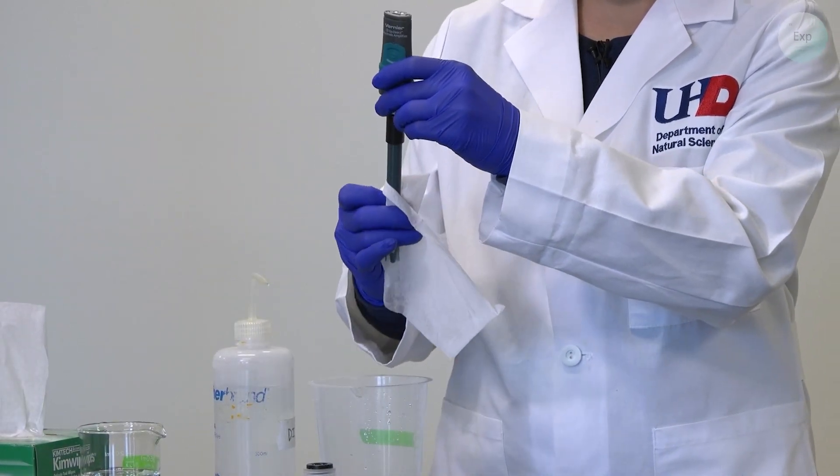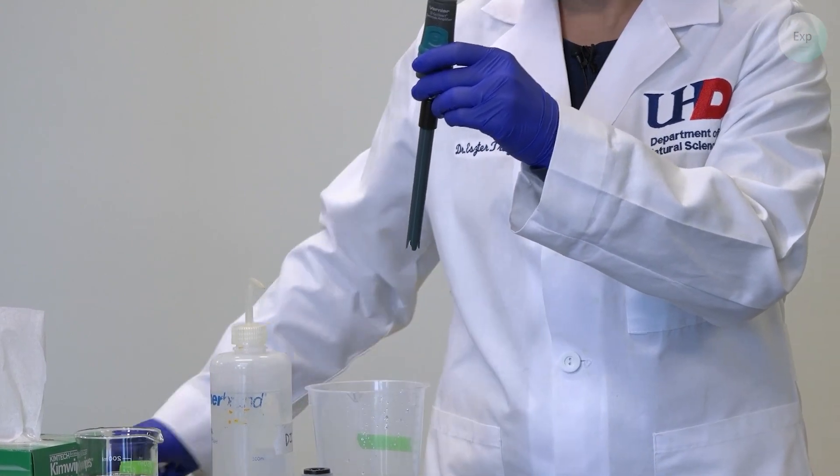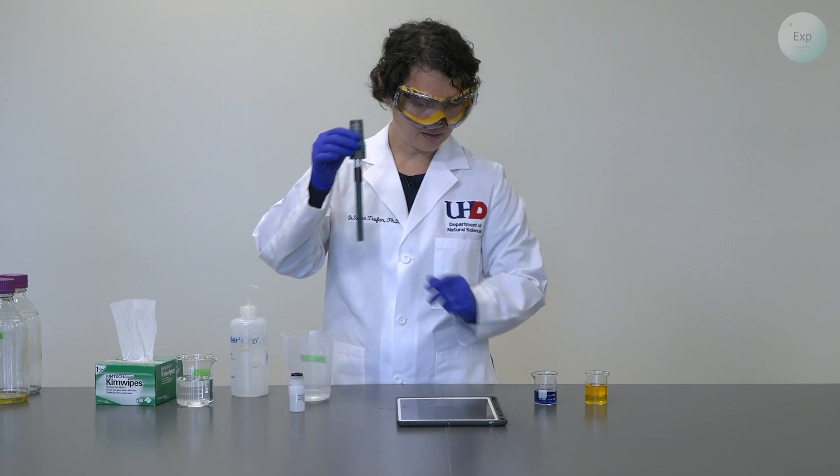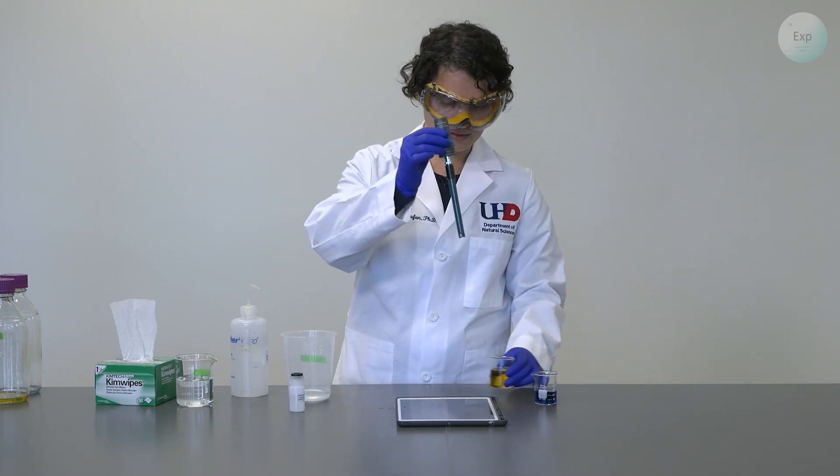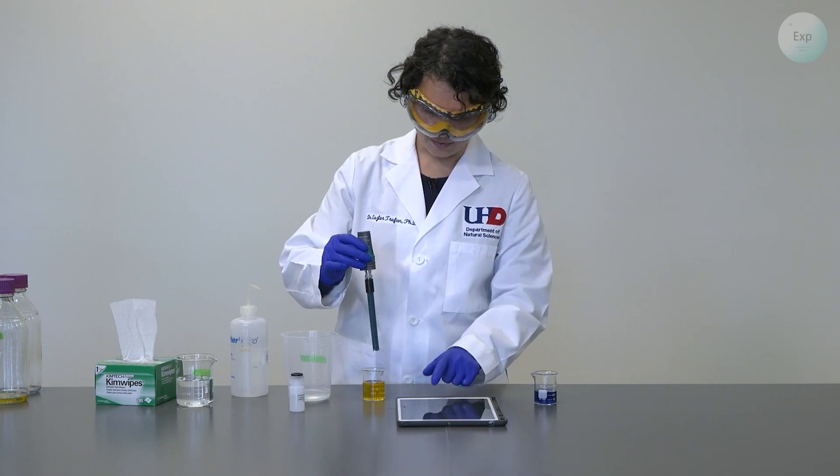Once it is rinsed, we wipe it with the kim wipes and then we can discard the kim wipe. We transition the pH probe inside our calibration liquid.